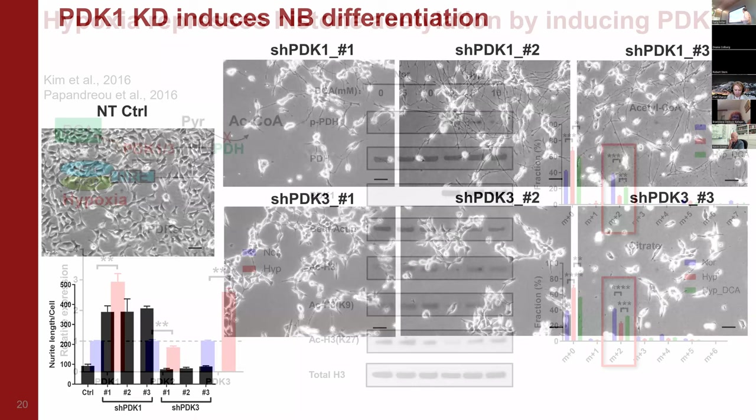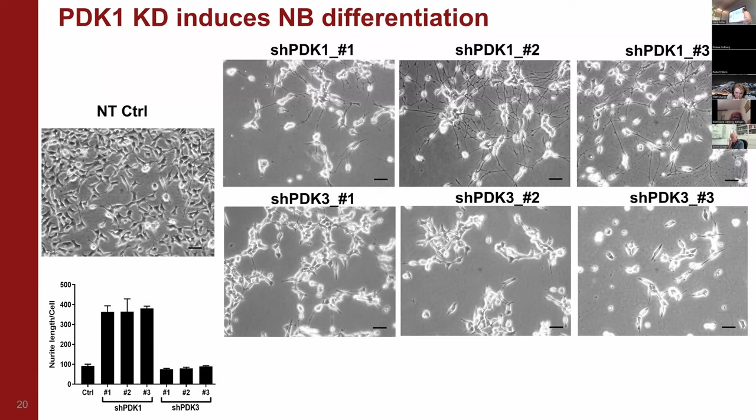Because both PDK1 and PDK3 are induced under hypoxia, we wondered which one is responsible for de-differentiation. Using shRNA to knock down either PDK1 or PDK3, it is very obvious that knocking down PDK3 only reduces proliferation but does not change differentiation. But knocking down PDK1 itself induced very dramatic neuron differentiation, even without retinoic acid treatment.